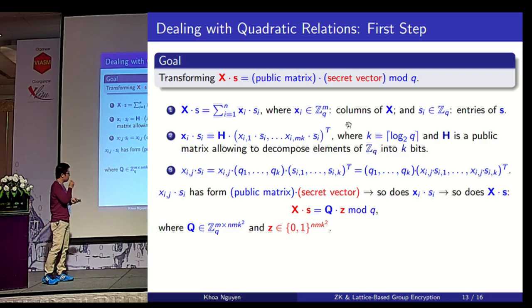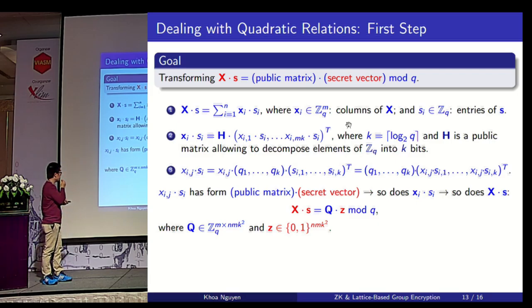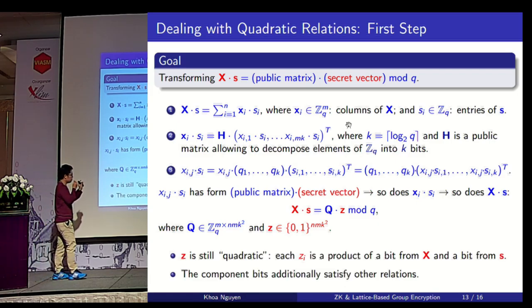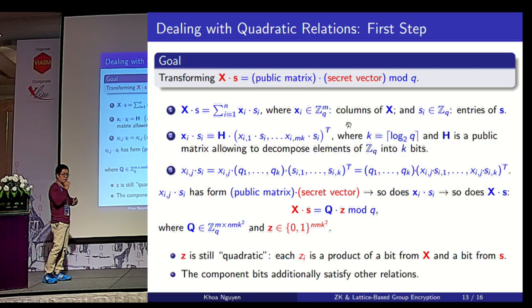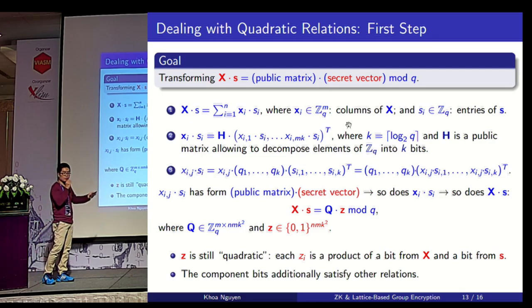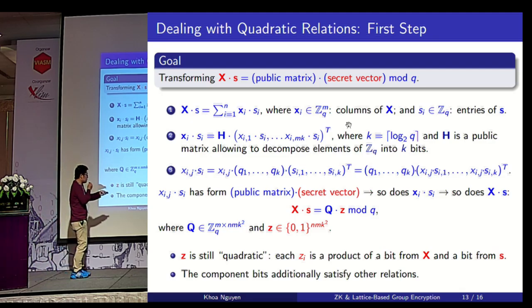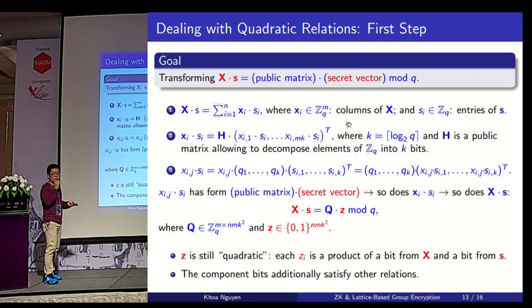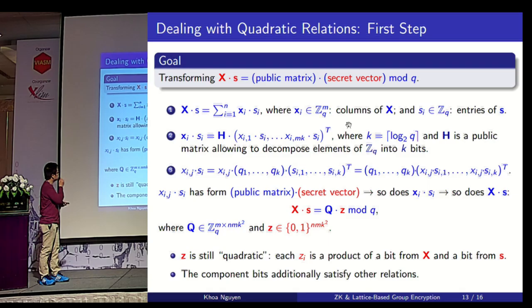This looks familiar, but the harder part is still ahead. Vector Z is still quadratic in nature because each of its entries is a product of a bit from matrix X and a bit from vector S. Second, the component bits also additionally satisfy all the relations.